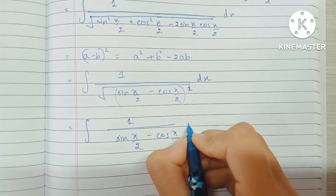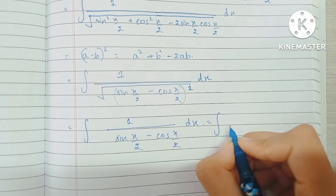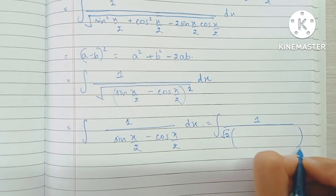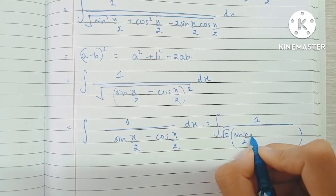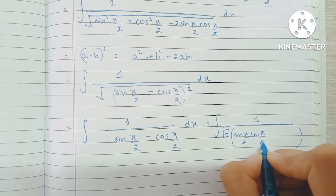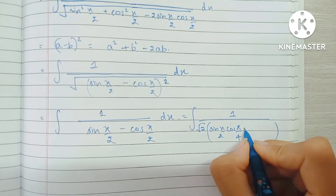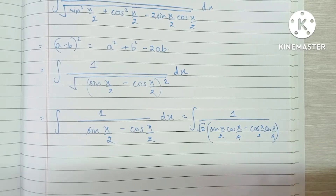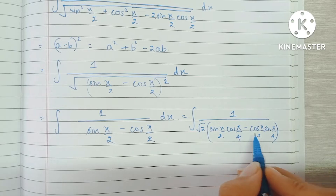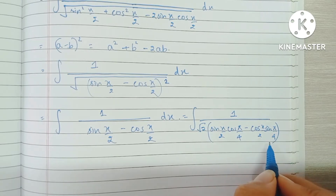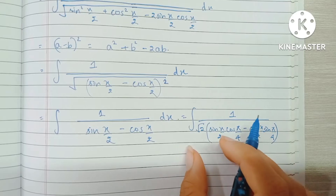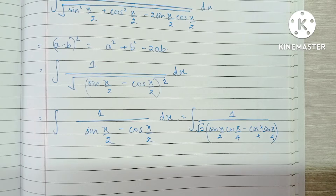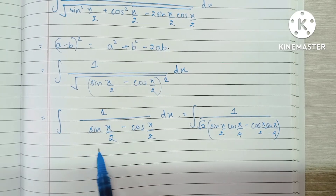Now we do a trick: multiply by root 2, and inside we write sine(x/2) times cos(π/4) minus cos(x/2) times sine(π/4). The reason is that cos(π/4) and sine(π/4) are both 1/√2, so we can take out 1/√2 as a common factor and cancel out the root 2, giving us back sine(x/2) minus cos(x/2).